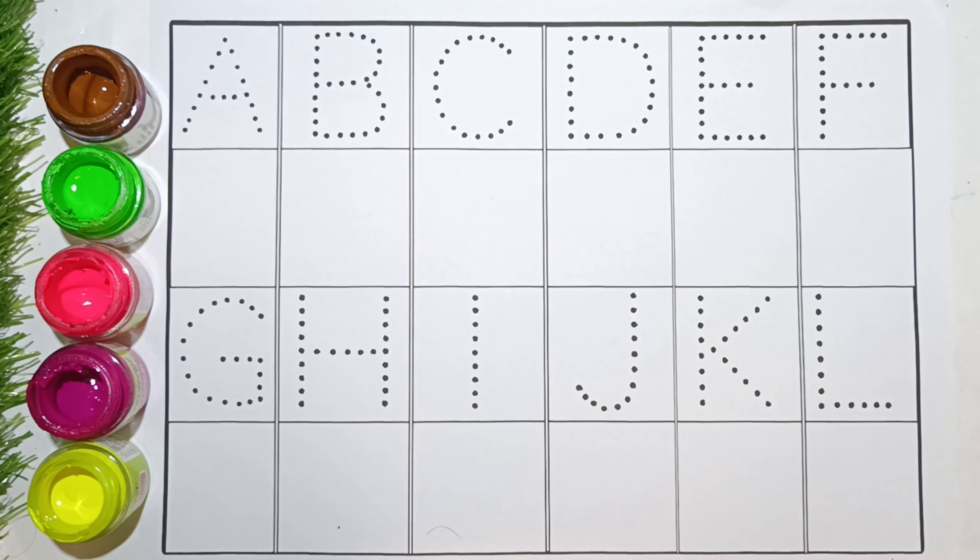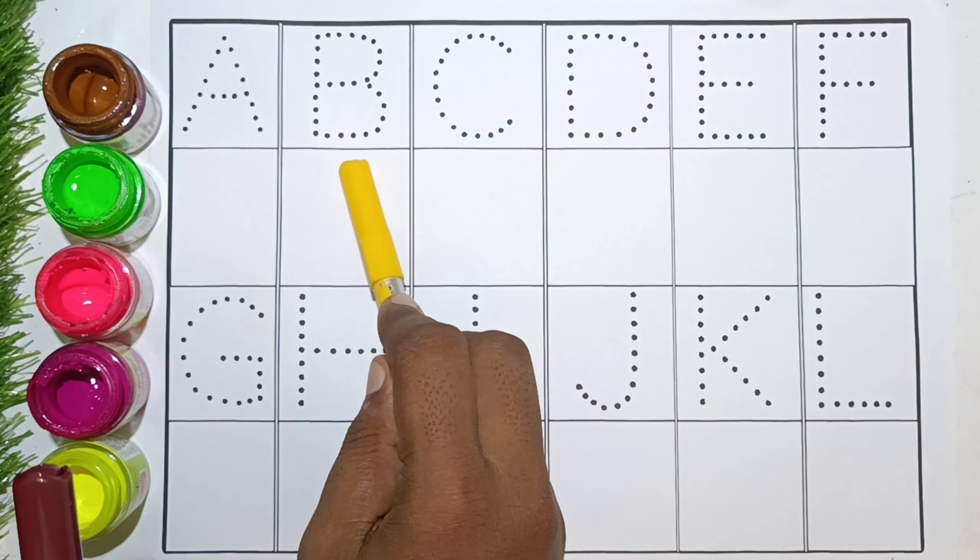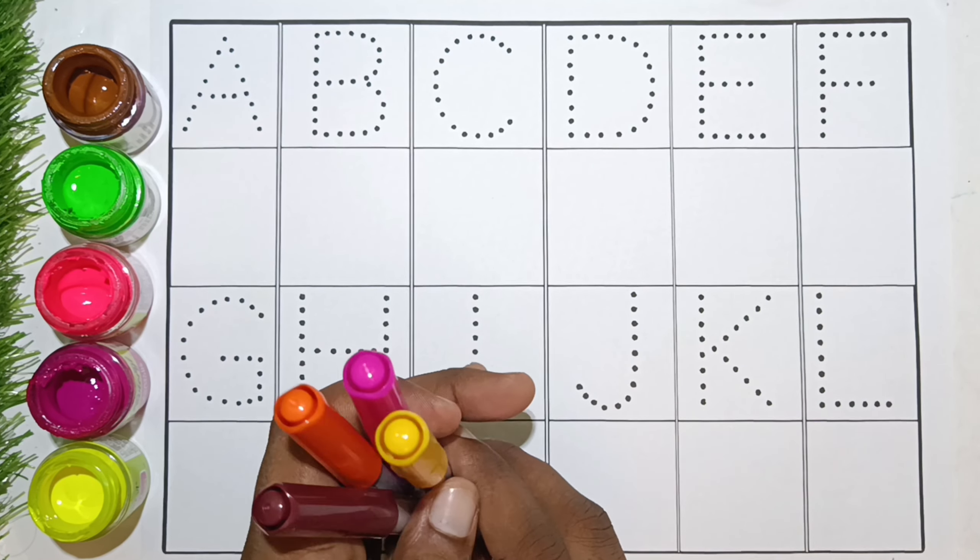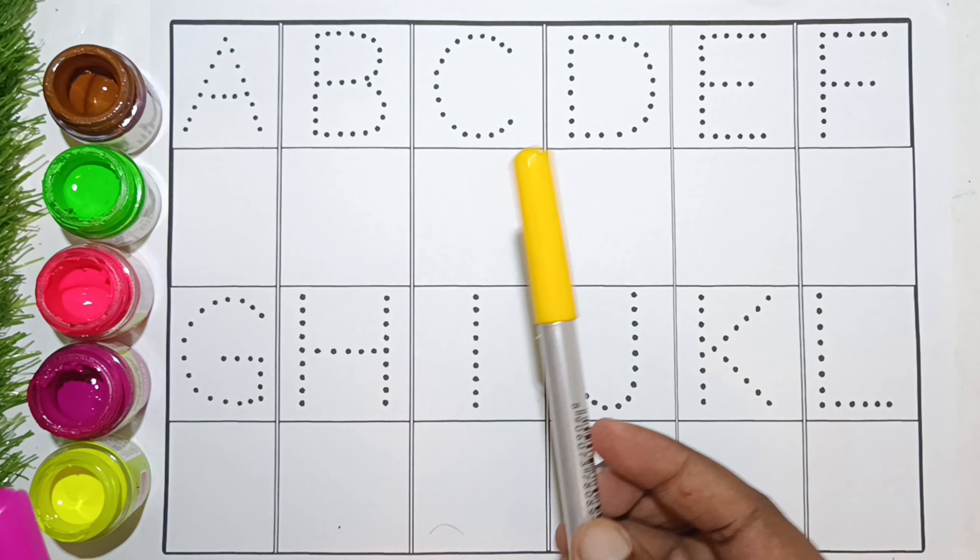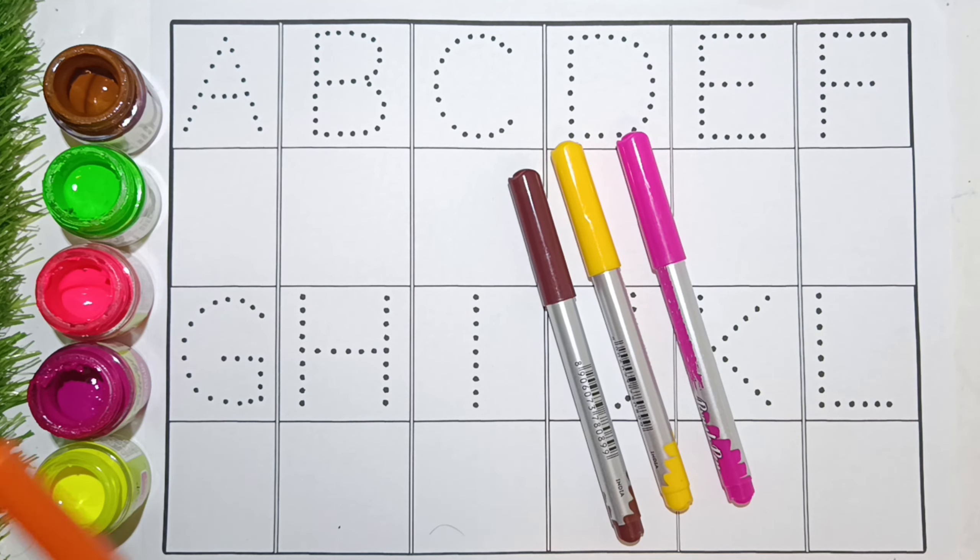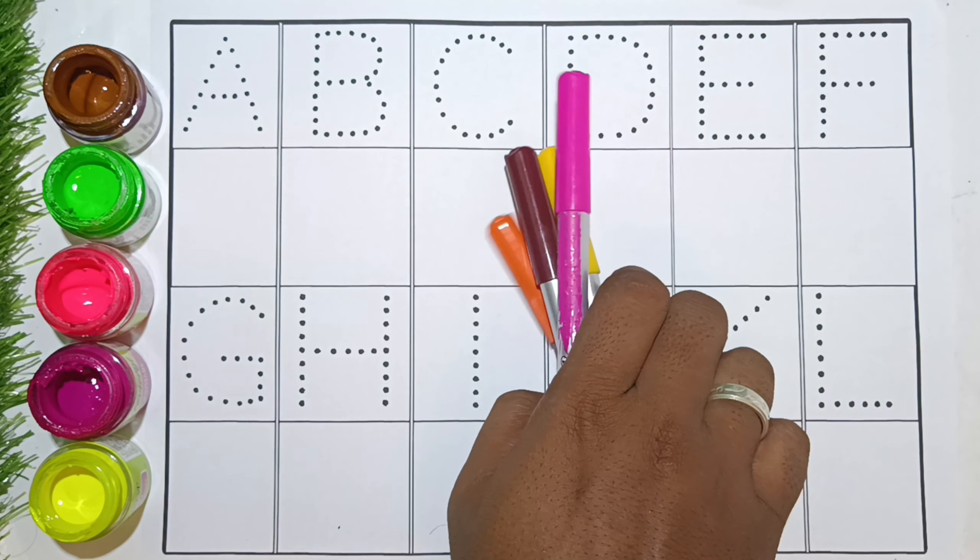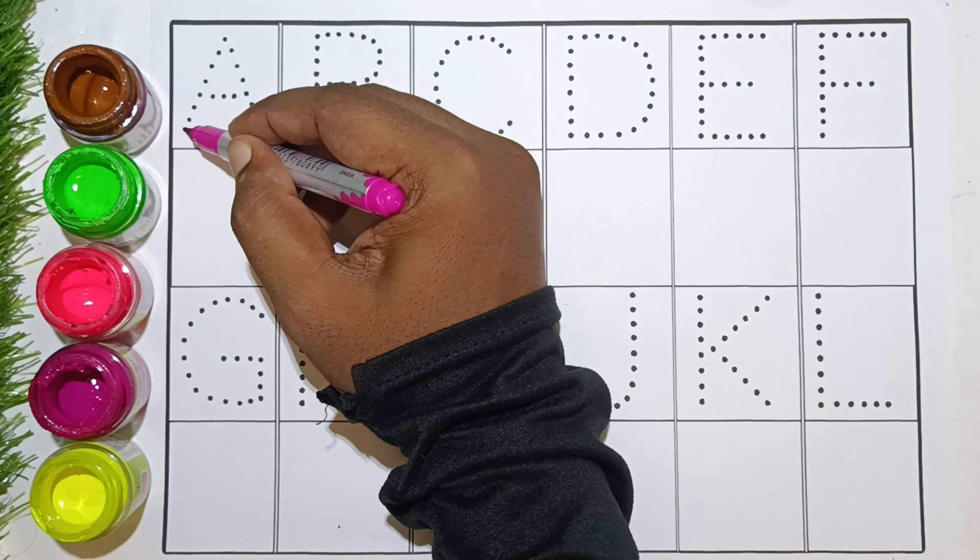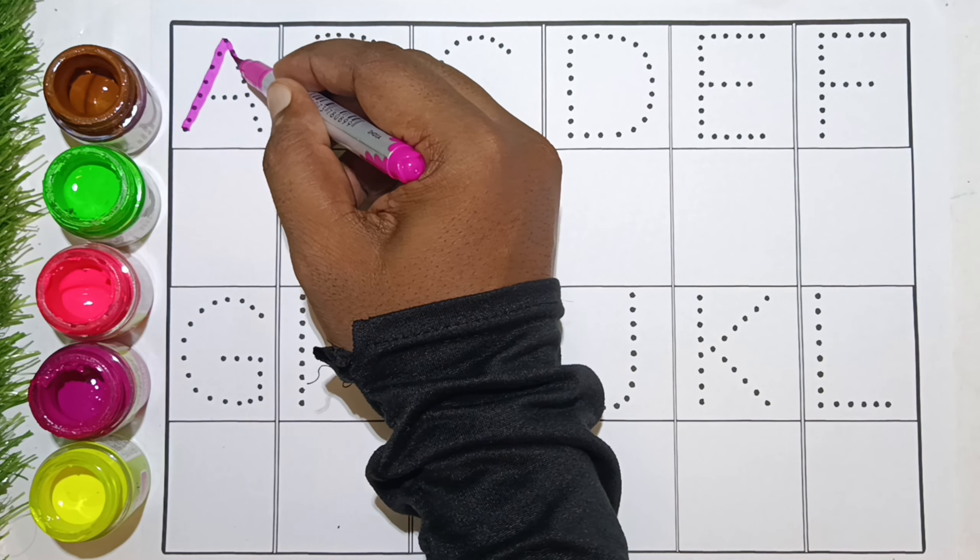Hello kids, today we are going to learn A for apple, B for ball. So let's just see our colors. This is yellow color, pink color, brown color, orange color. So let's just start with pink color.